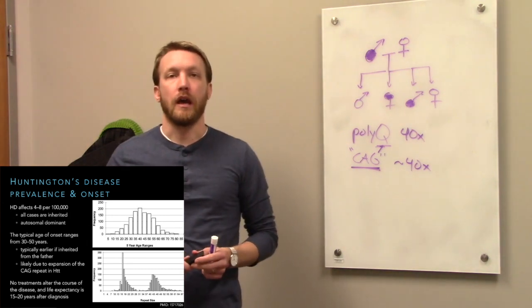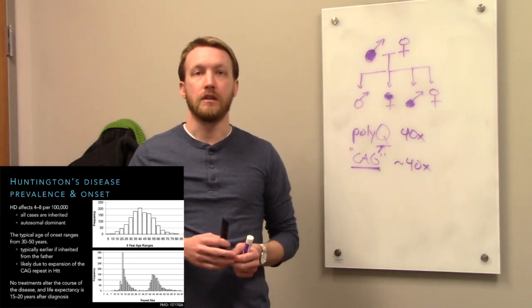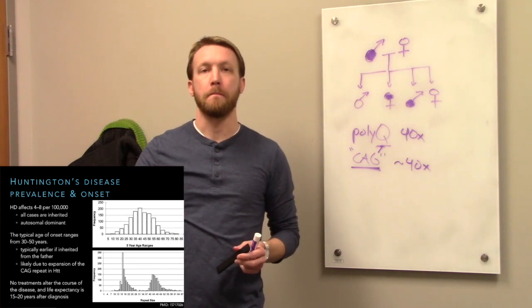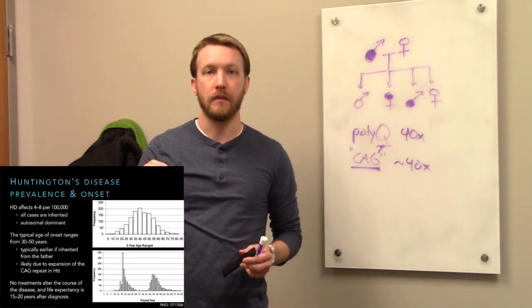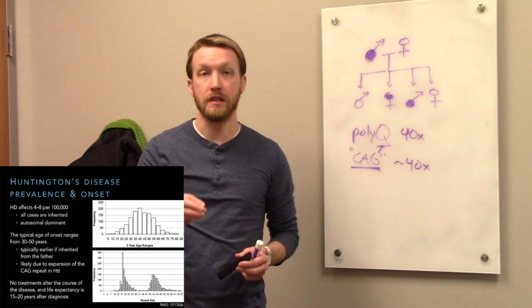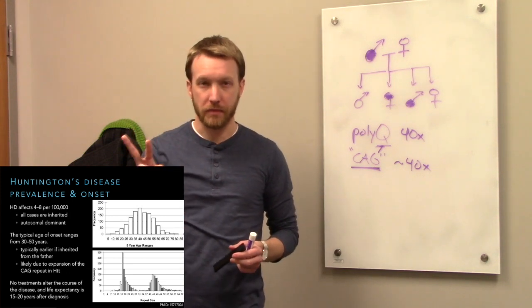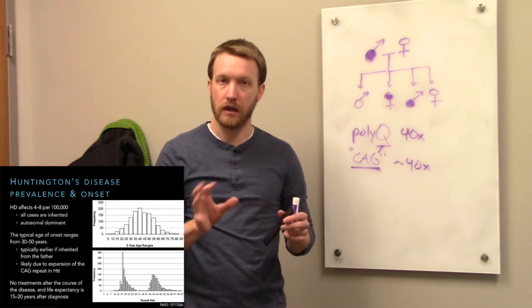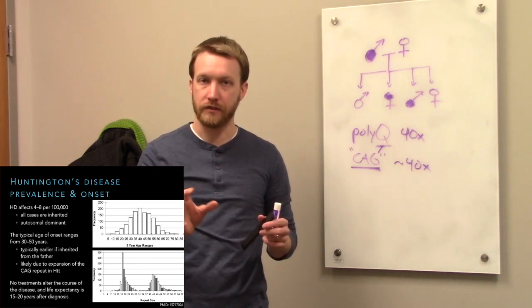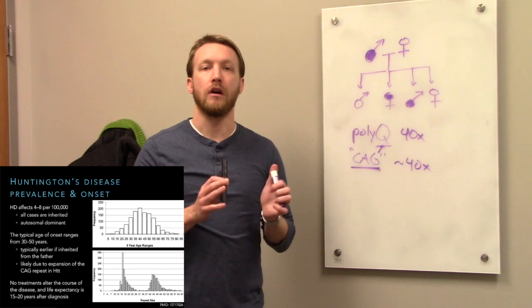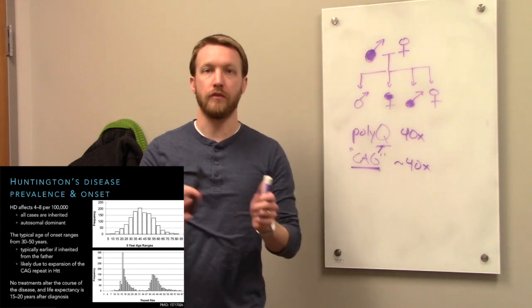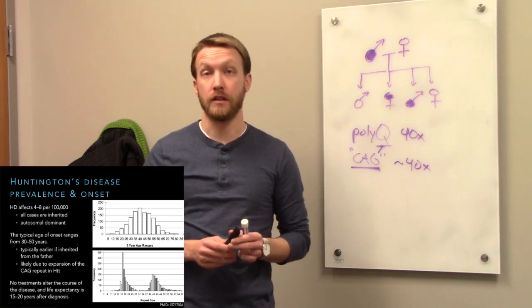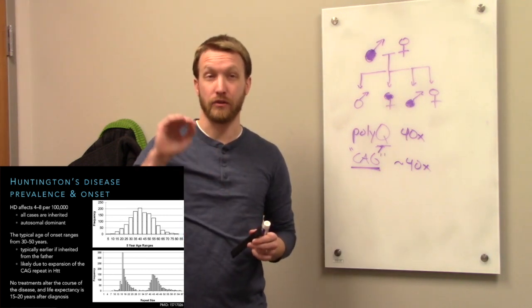In these data, what we're looking at would be the typical age of onset on top. You can see it is basically a normal distribution. And on the bottom, here we're looking at the repeat sizes. And you'll notice there's basically two populations here. That distribution on the left, kind of centered around 16 or 17 repeats, those are unaffected individuals. And then folks with Huntington's disease would be that distribution on the right that starts to creep up at about 40.